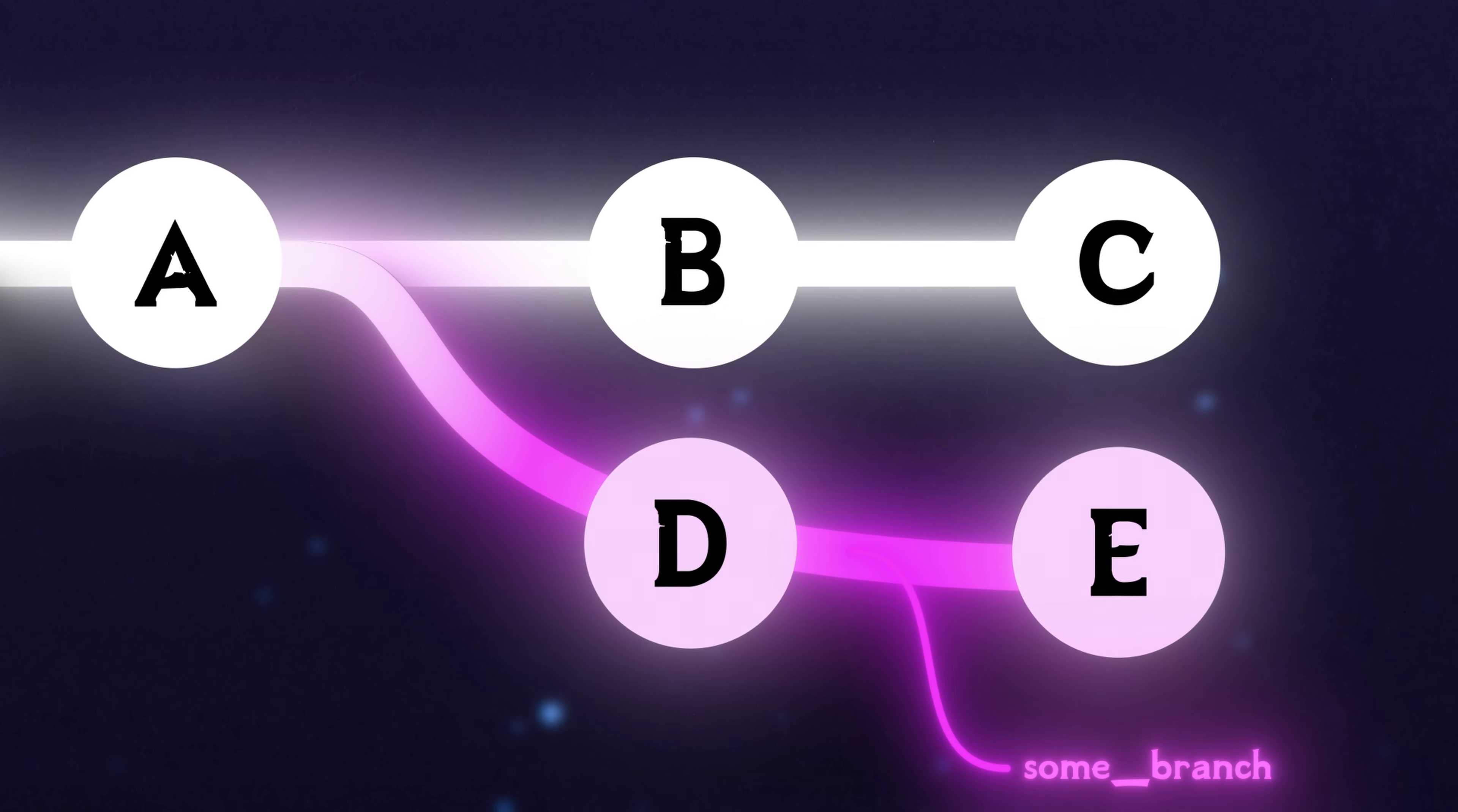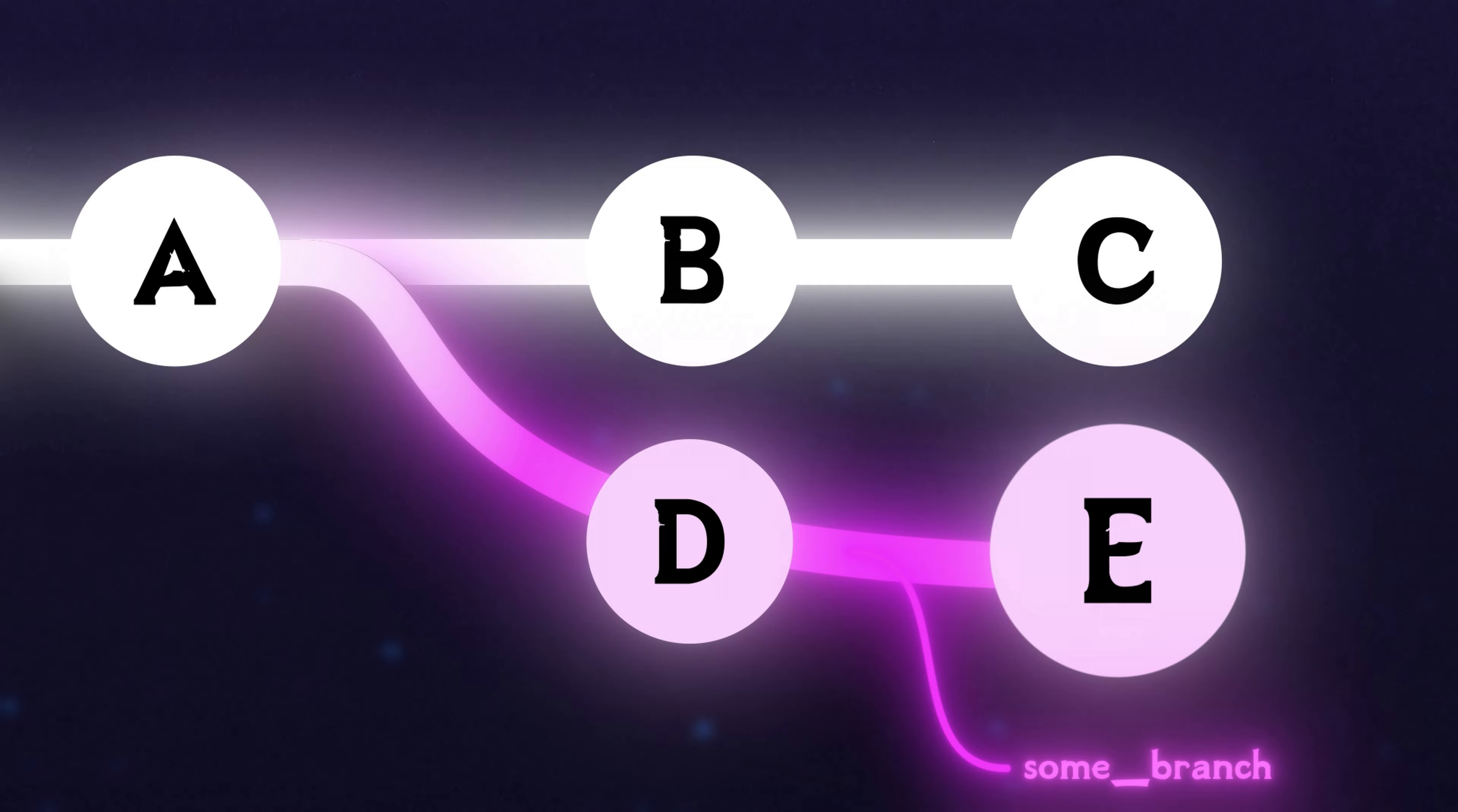Main has B and C. Our branch, some branch, has D and E. That means when we merge, we need to be able to create a new commit that represents these two diverging histories as one. This is called a merge commit.